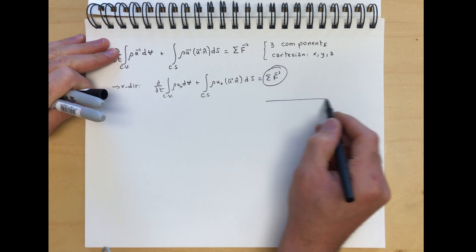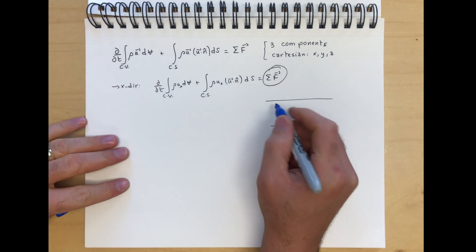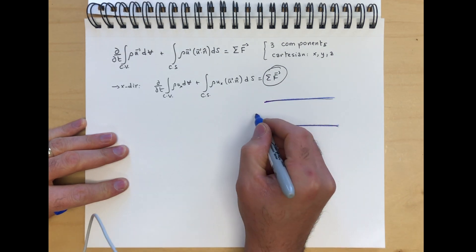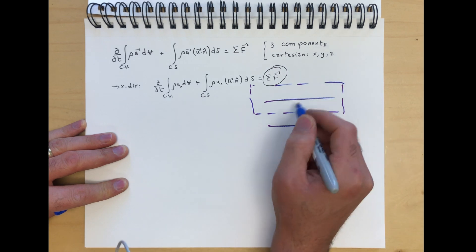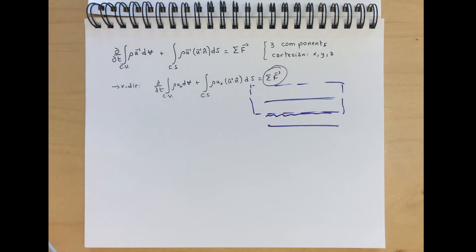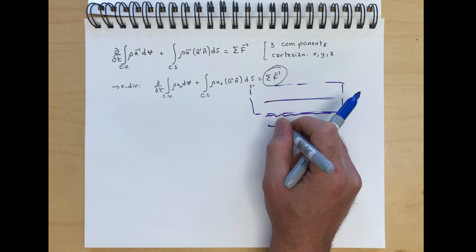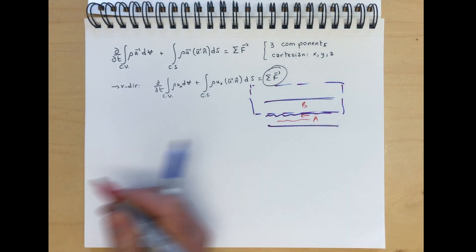Say you have a little flow in a pipe, and then, for some reason, you select this control volume like this. So you're going to have some forces going on over here exerted by this fluid, A on fluid B.